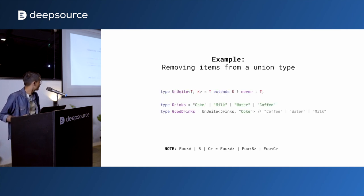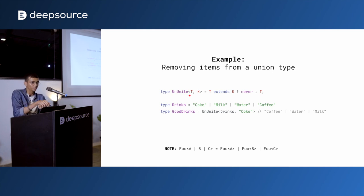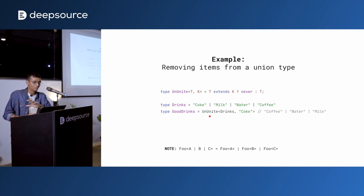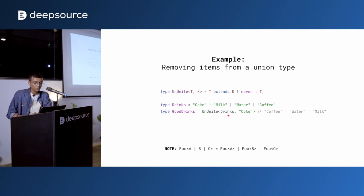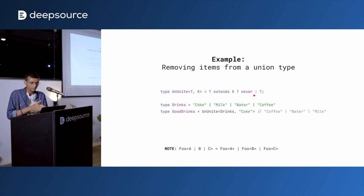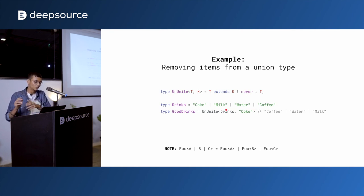Here's a slightly more advanced example — Ununite, whose purpose is to remove a type from a union. You have a type called Drinks, a union of Coke, milk, water, and coffee. If you want only the good drinks and do Ununite<Drinks, Coke>, the operation applies to every member of the union. Ununite<Coke, Coke> evaluates to never. So you get never | milk | water | coffee. Never is a bottom type — no value can ever have type never — so never unioned with X gives back X. You've successfully removed a member from a union type.